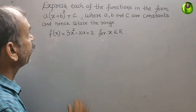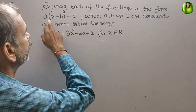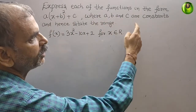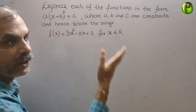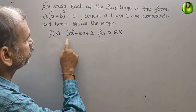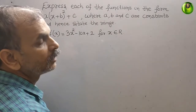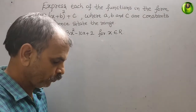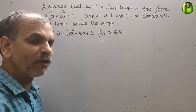The question is to express each of the functions in the form a(x + b)² + c, where a, b, and c are constants, and hence state the range. The given function is f(x) = 3x² - 10x + 2, for x belonging to the real numbers. We have already learned the completing the square method, so we will use that.